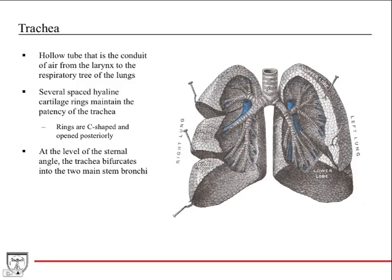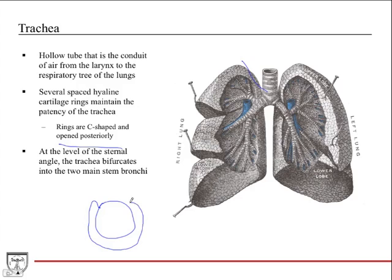The trachea has several evenly spaced hyaline cartilage rings. Each of these is a ring of cartilage, and their objective is to maintain the patency of the trachea — if the trachea closes, you lose airflow. The rings of cartilage keep the trachea open to maintain airflow. They're C-shaped and open posteriorly. Looking at a cross-section, the cartilage goes around like a C-shape and is open posteriorly.